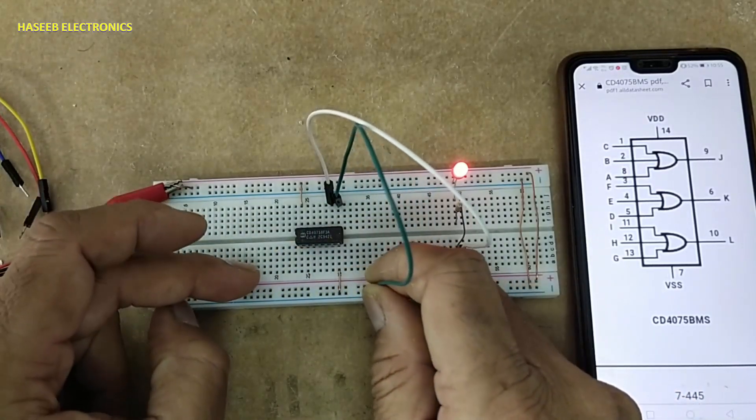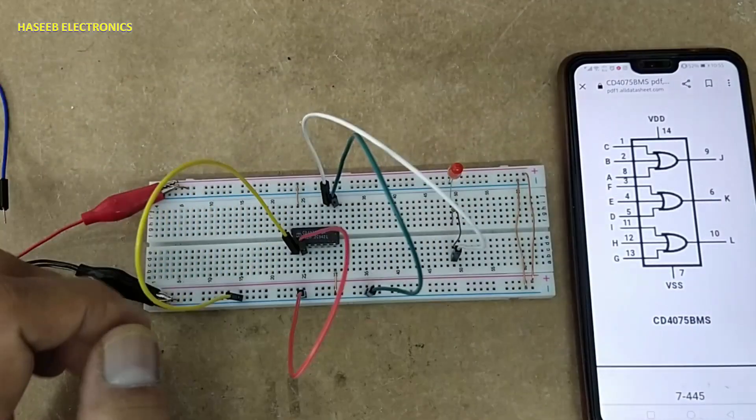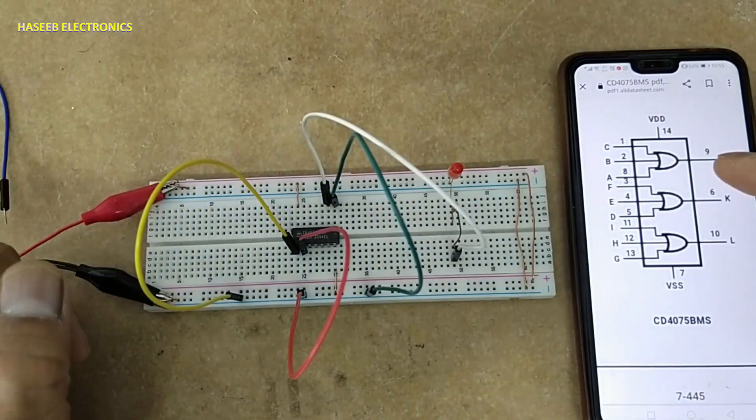First we will apply low to all inputs, pins 1, 2, and 8. When we discuss OR gate logic, when all inputs are low, the output is low.